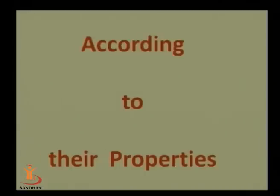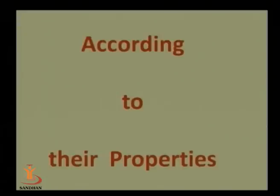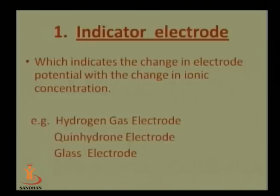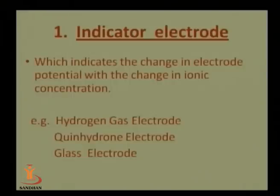The third category is classification according to their properties. Indicator electrodes are of three types: hydrogen gas electrode, quinhydrone electrode, and glass electrode. The indicator electrode indicates the change in electrode potential with the change in ionic concentration. In neutralization titration, changes depend on hydrogen ion and OH⁻ ion concentration. As the concentration changes during the reaction, the indicator electrode measures that change, and the resulting EMF is measured by the potentiometer.